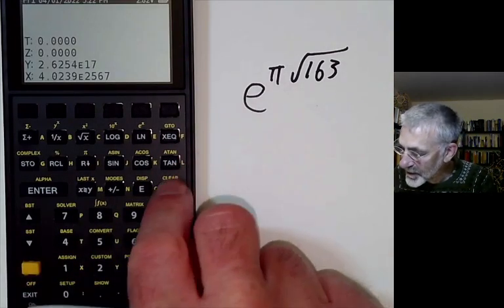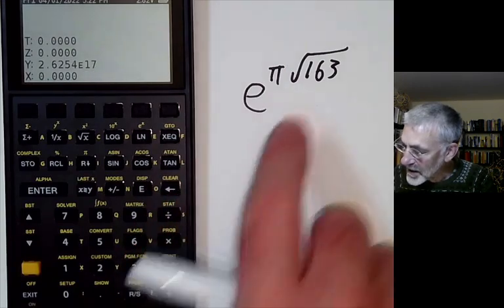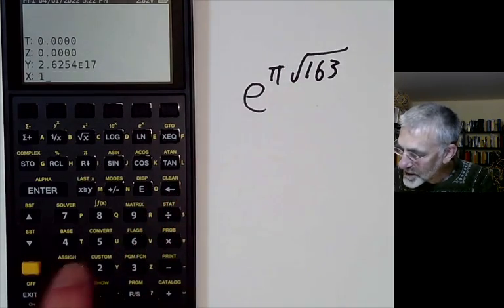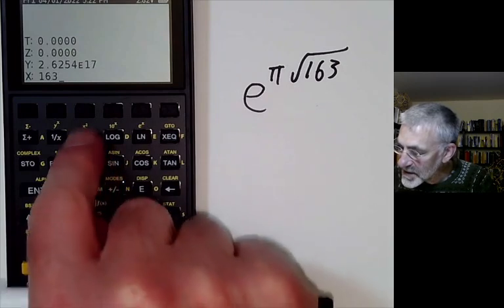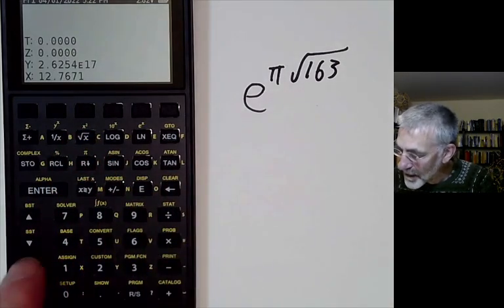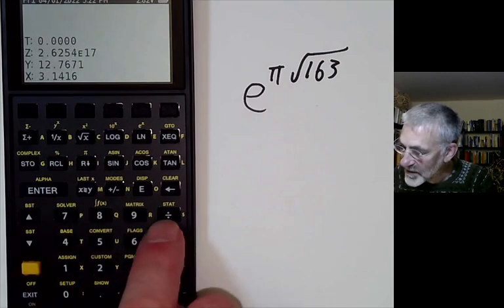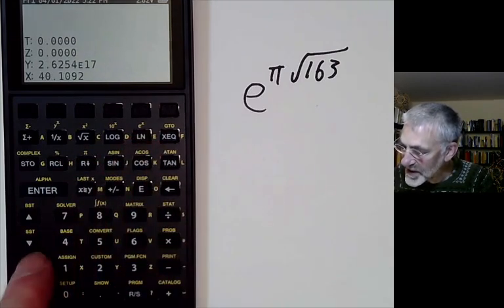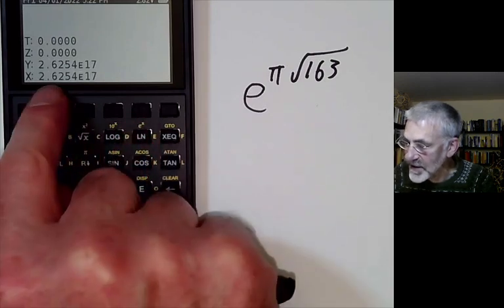We take 163, we take its square root, we multiply it by pi. Let me multiply them together. Now we exponentiate it, take e to the x, and you get this number.